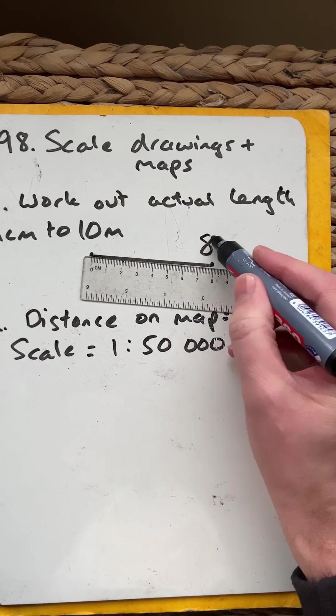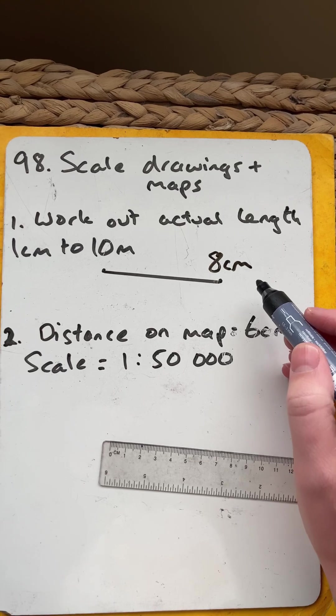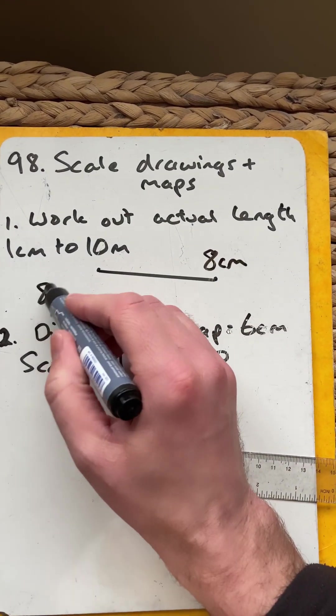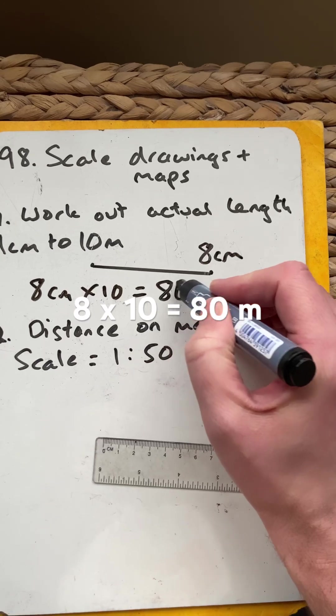And that is 8 centimetres on my map, so I need to work out what that represents in real life. So I do 8 centimetres times 10, and I get 80 metres.